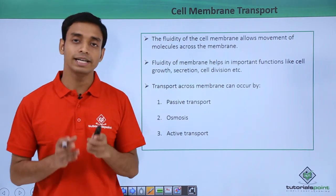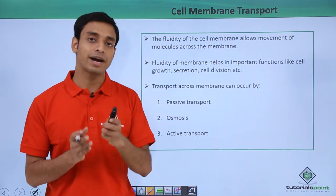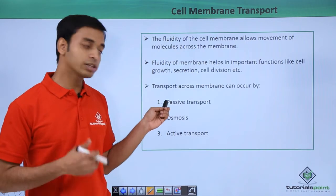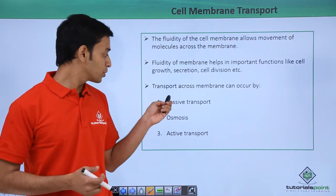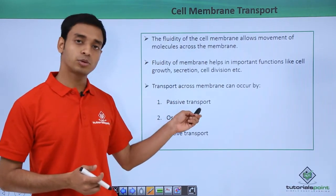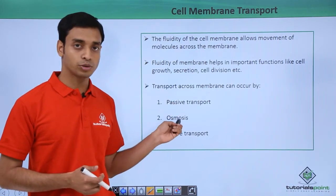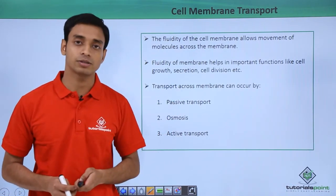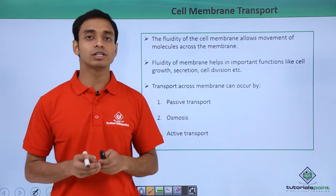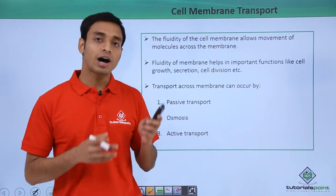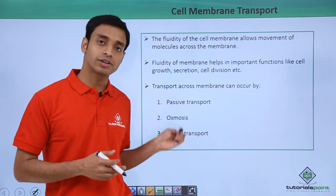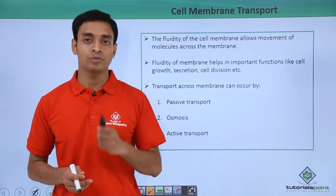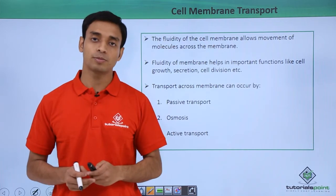Transportation across the membrane can happen by three different processes: passive transport, osmosis, and active transport. Let us look into how these transportation processes are happening.